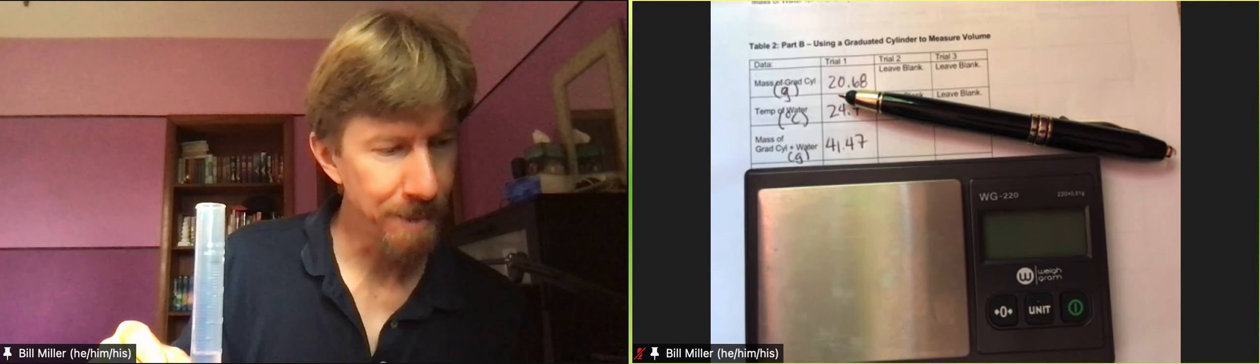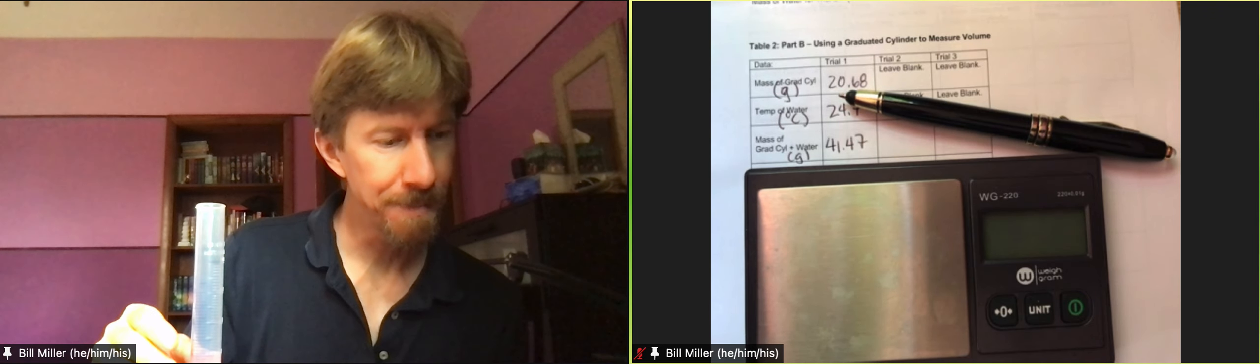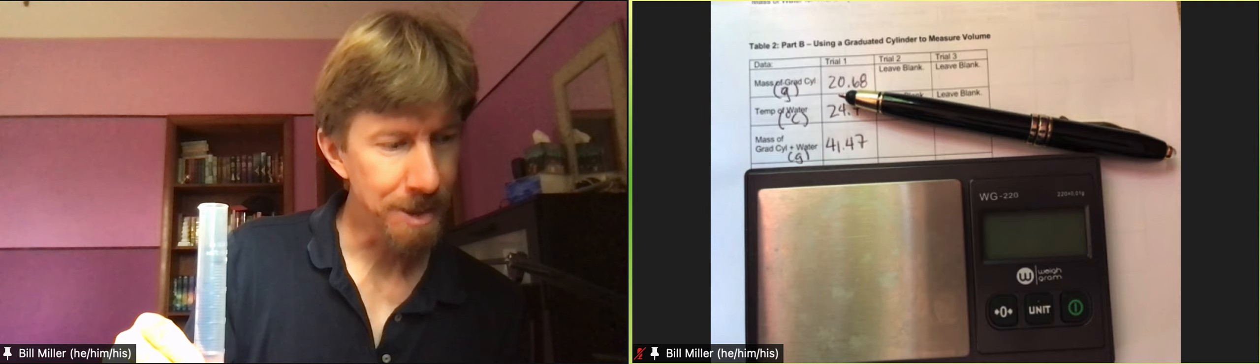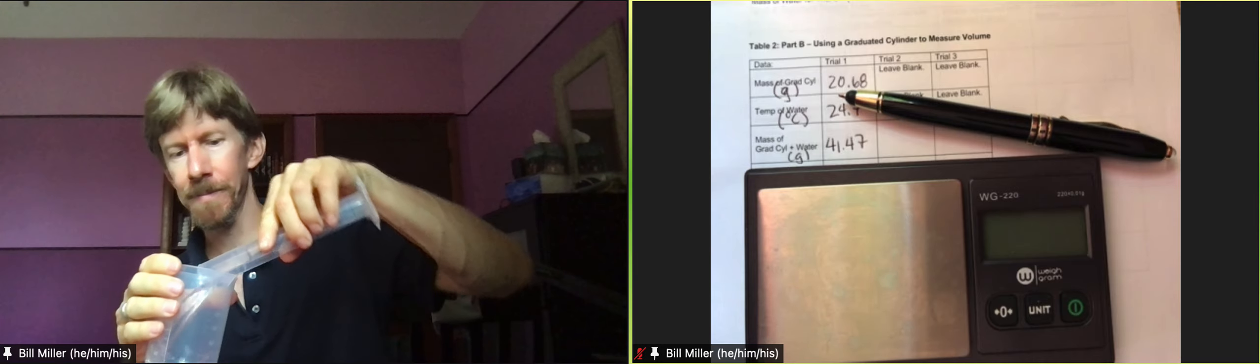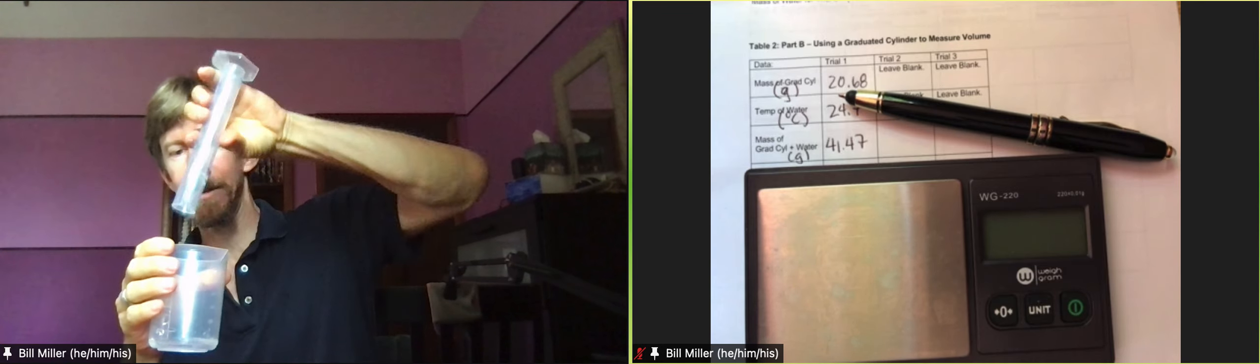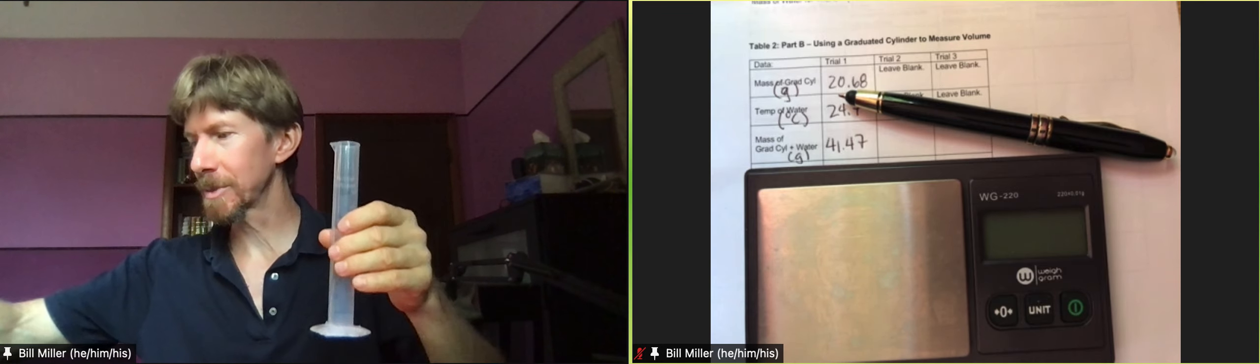Now we get that picture, record the mass of the graduated cylinder with your water in it, empty your graduated cylinder and carefully measure out another 20 milliliters. So I've got my waste beaker here, empty it out. You don't have to dry it out because you're just putting water in it again.